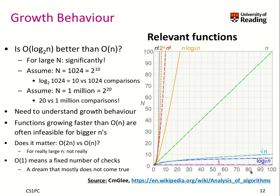On the x-axis is our input size; on the y-axis we see the runtime relative to each function. For n, if you have 100 inputs it takes 100 times as long as one input. For log₂(n) it will take significantly less — for 64, that's 2 to the power of 6. The square root of n is also significantly better: the square root of 100 is just 10.